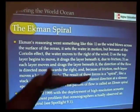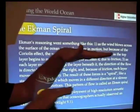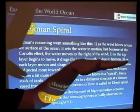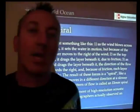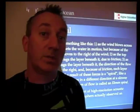And eventually the result is layers of water that are all moving in different directions from the surface to depth in what has now come to be known as the Ekman spiral.